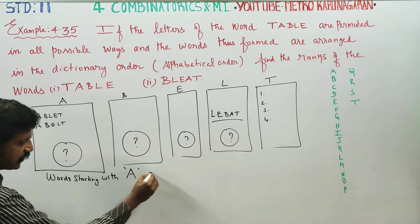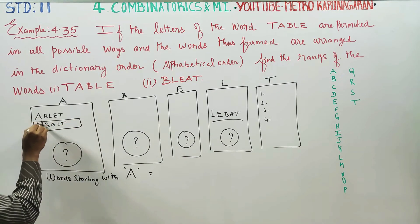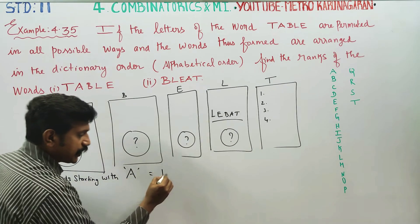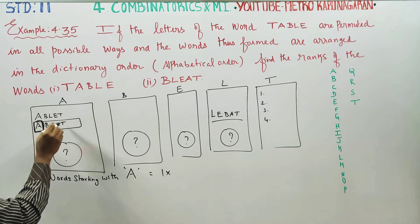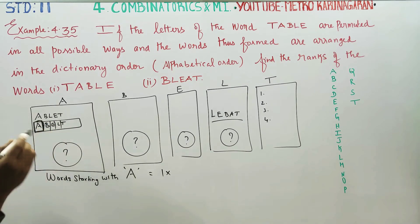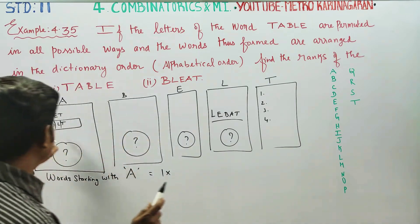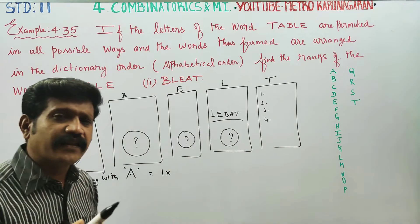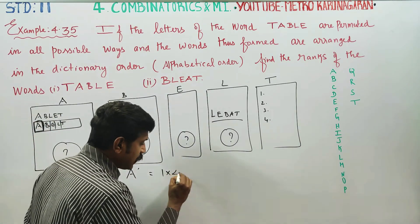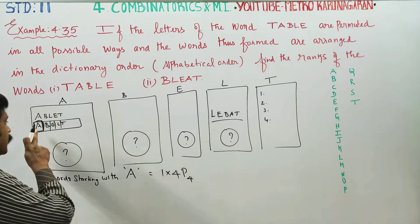Words starting with A: A is fixed. The remaining 4 letters B, E, L, T can fill the remaining 4 places. That is 4P4 ways. So words starting with A equal 4 factorial, which is 24.